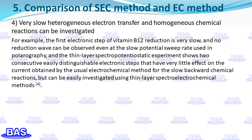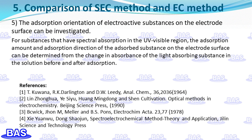Fourth, spectro-electrochemistry can study very slow heterogeneous electron transfer and homogeneous chemical reactions. For example, the first electronic step of reduction of vitamin B12 is so slow that no reduction wave is observed even at slow potential sweep rates used in polarography, whereas thin-layer spectroscopic potentiostatic experiments show two consecutive distinct electron steps with little effect from slow backward chemical reactions on the currents obtained. Fifth, the adsorption orientation of electroactive substances on the electrode surface can be investigated; for substances with spectral absorption in the UV-visible region, the adsorption amount and direction on the electrode surface can be determined from changes in absorbance before and after adsorption.